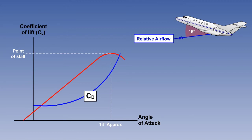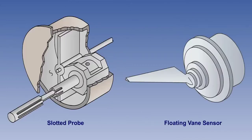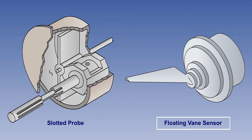The angle of attack is therefore an ideal reference point for stall warning or stall prevention systems. Integral to an angle of attack indicator system is the angle of attack sensor. There are two types of angle of attack sensors in general use: the slotted probe and the floating vane sensor. Both types are protected against ice formation by heaters, and they are usually mounted on either side of the front fuselage.